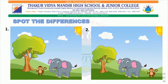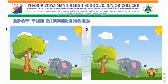Children, first we will begin with the tree. If you observe both the pictures carefully, you will observe the difference between both the trees. In the first picture, the tree is big. Whereas, in the second picture, the tree is small. There are two beautiful animals in both the pictures: a monkey and an elephant. In the first picture, the monkey is in front of the elephant. And in the second picture, the monkey is behind the elephant.